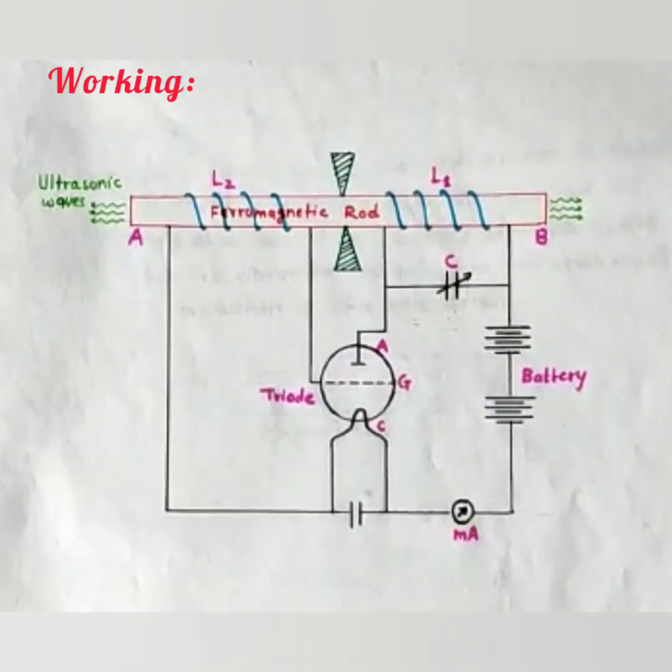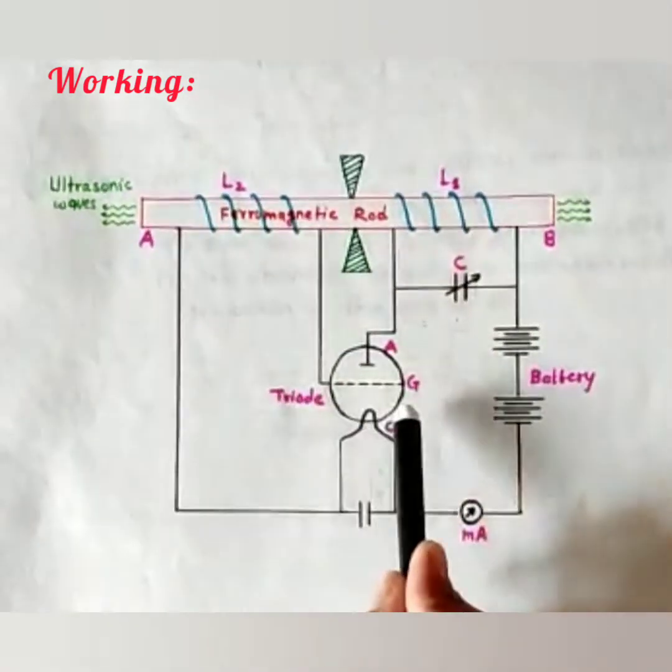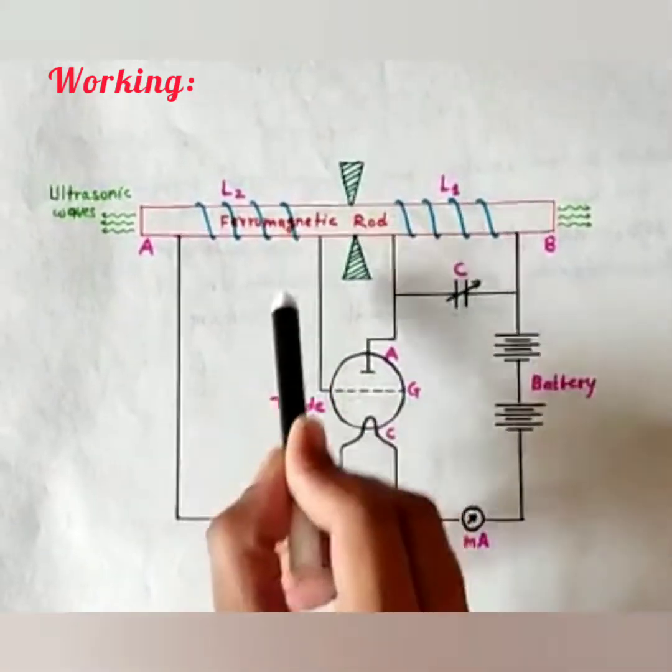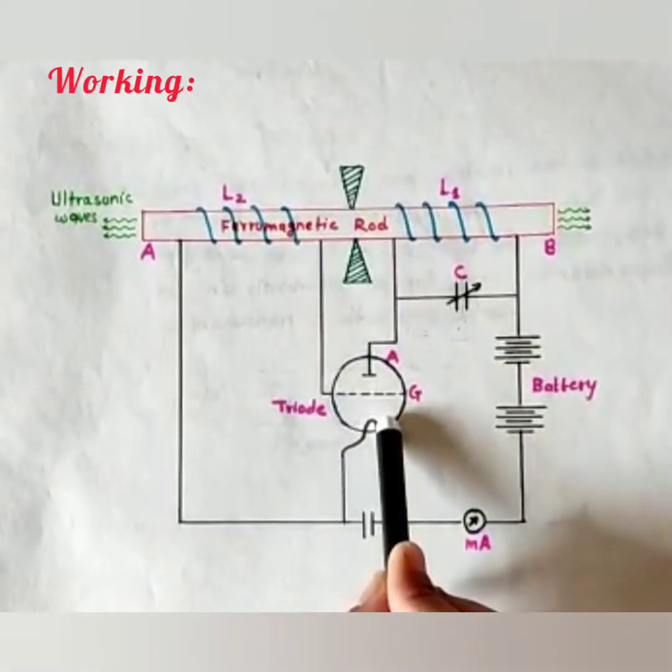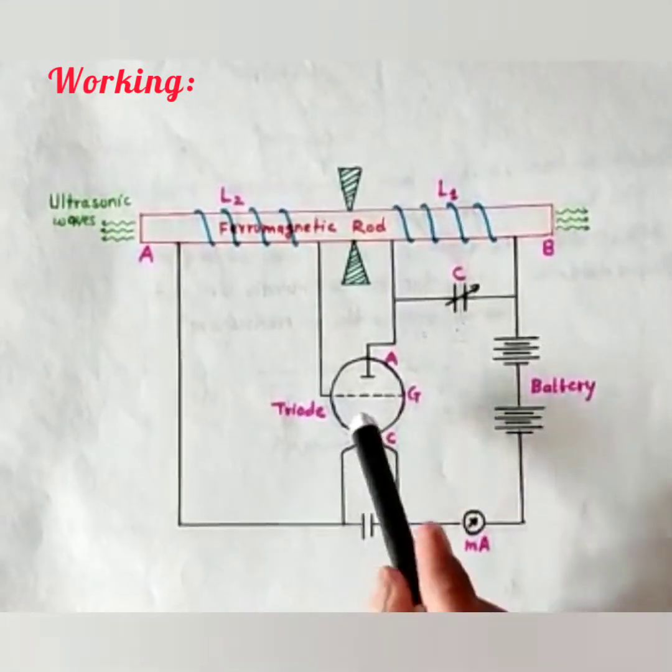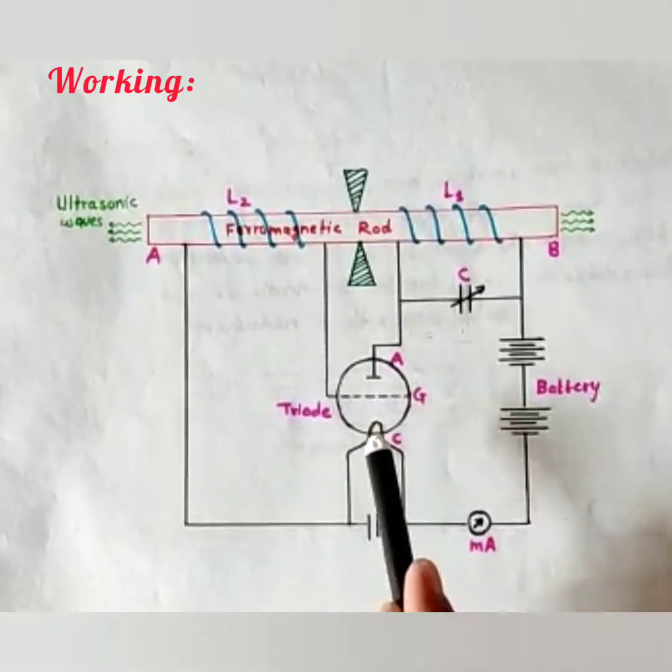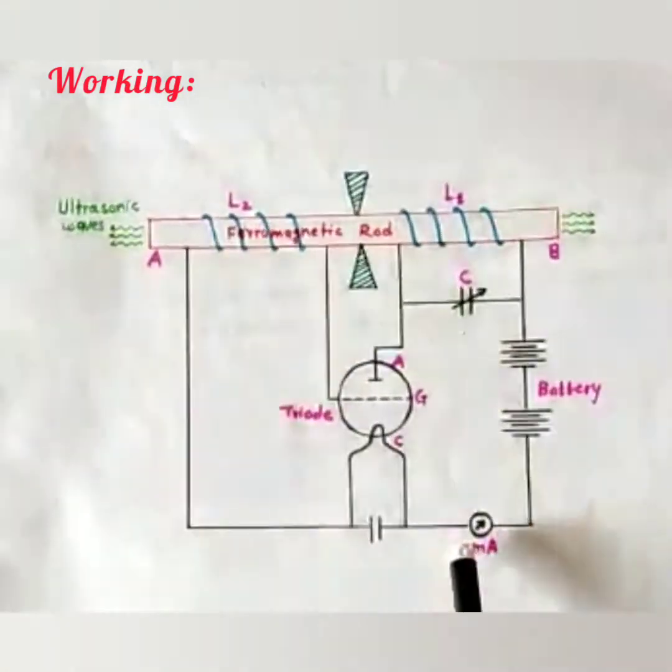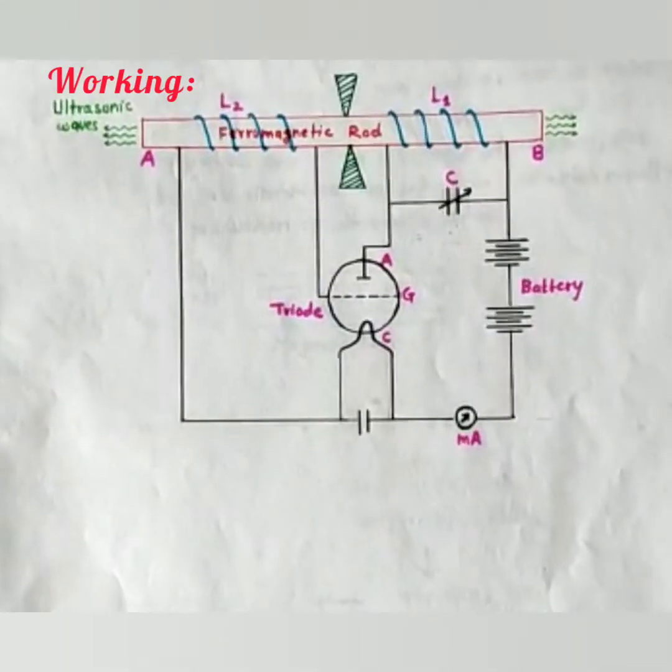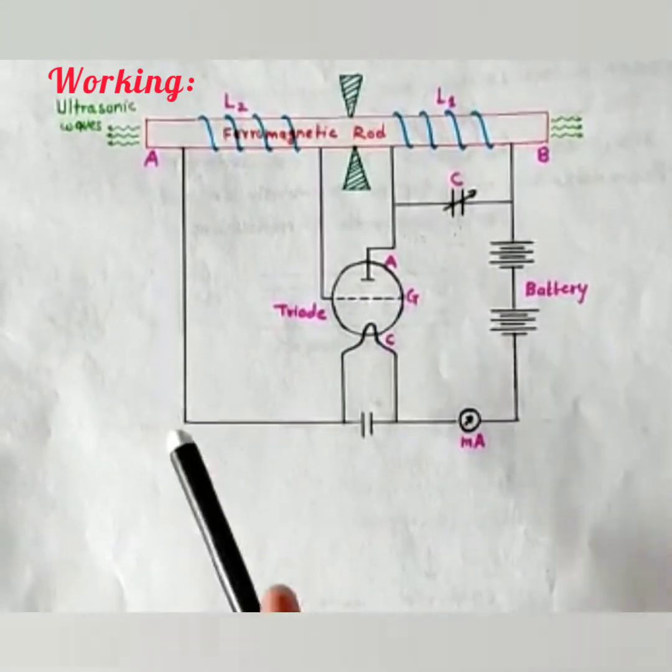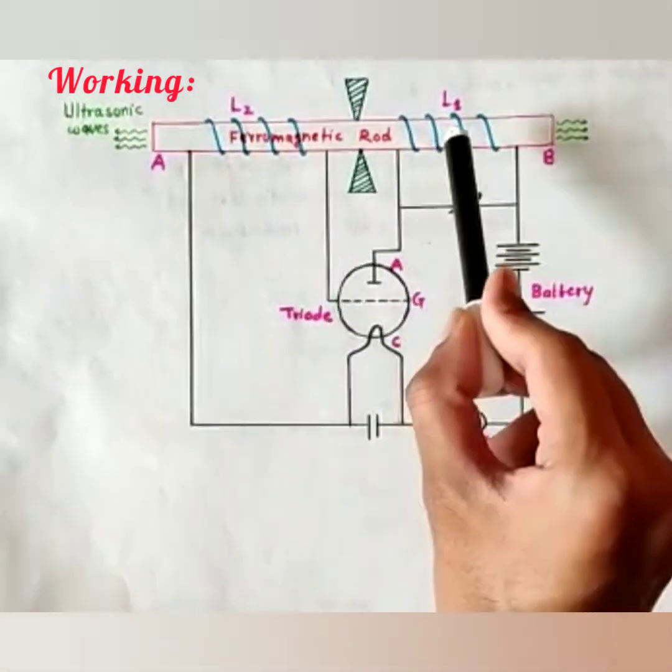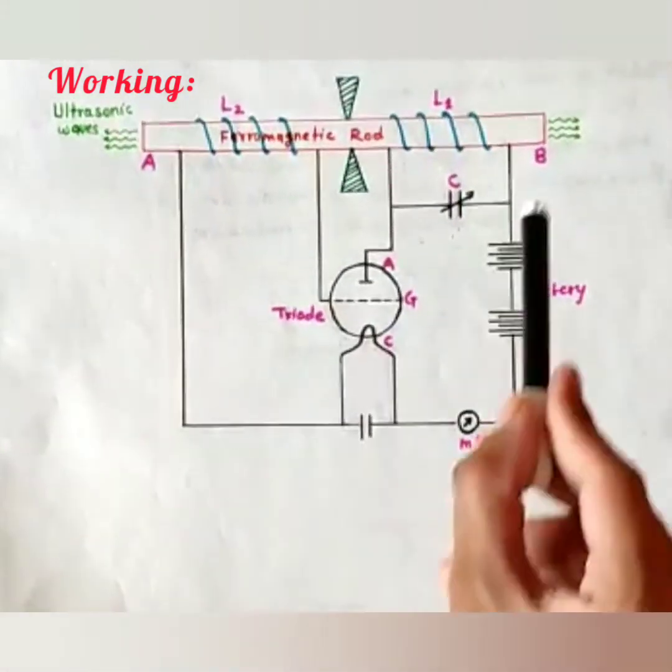This induced EMF is again given to gate G of the triode from this side and to the cathode of the triode. This will result in amplify or modify the current flowing through the circuit. This modified current will again pass through the coil L1 and hence, vibrations are maintained in the rod.